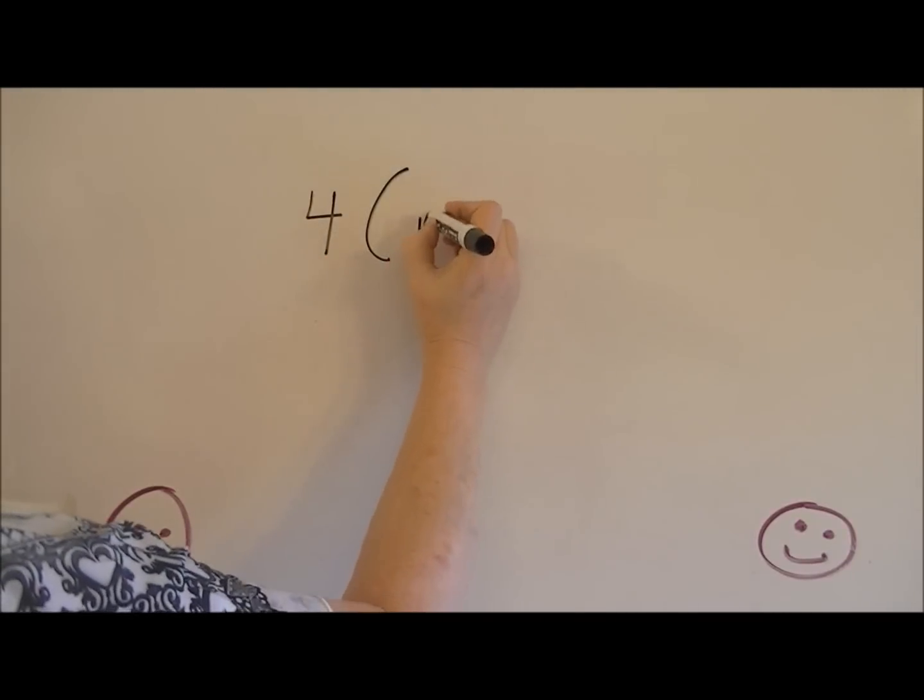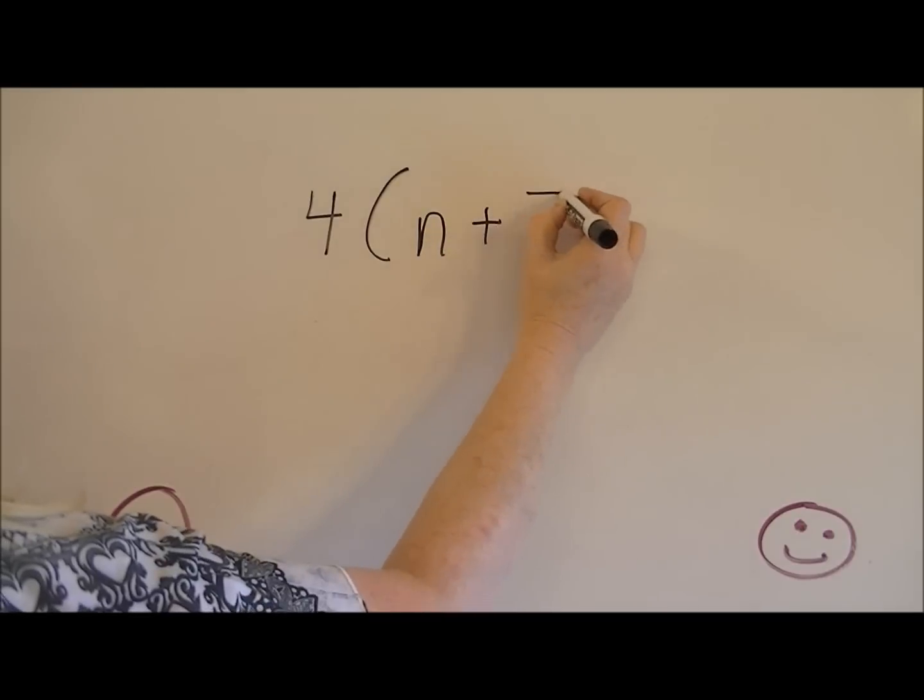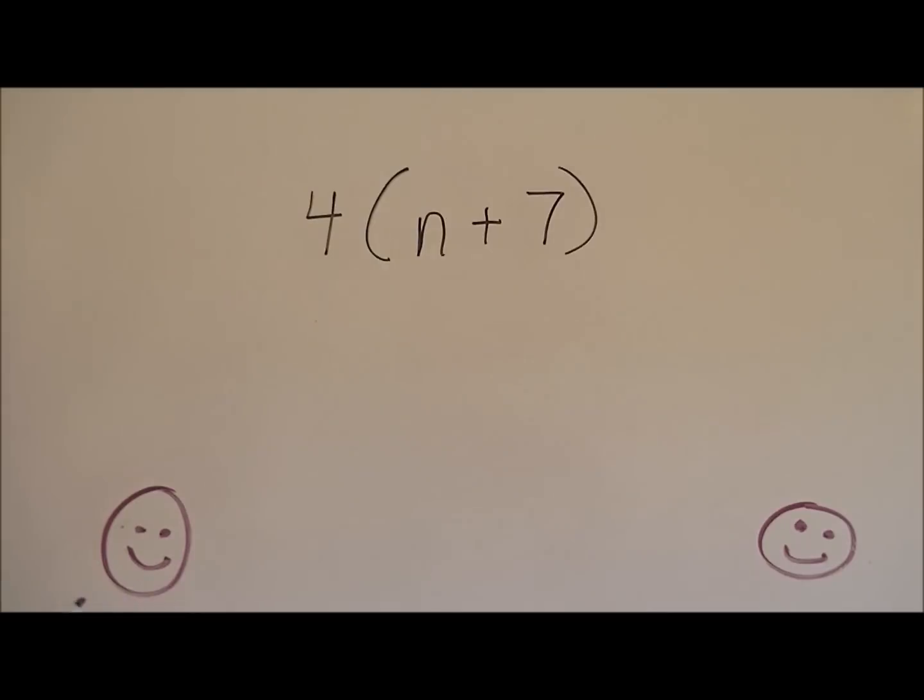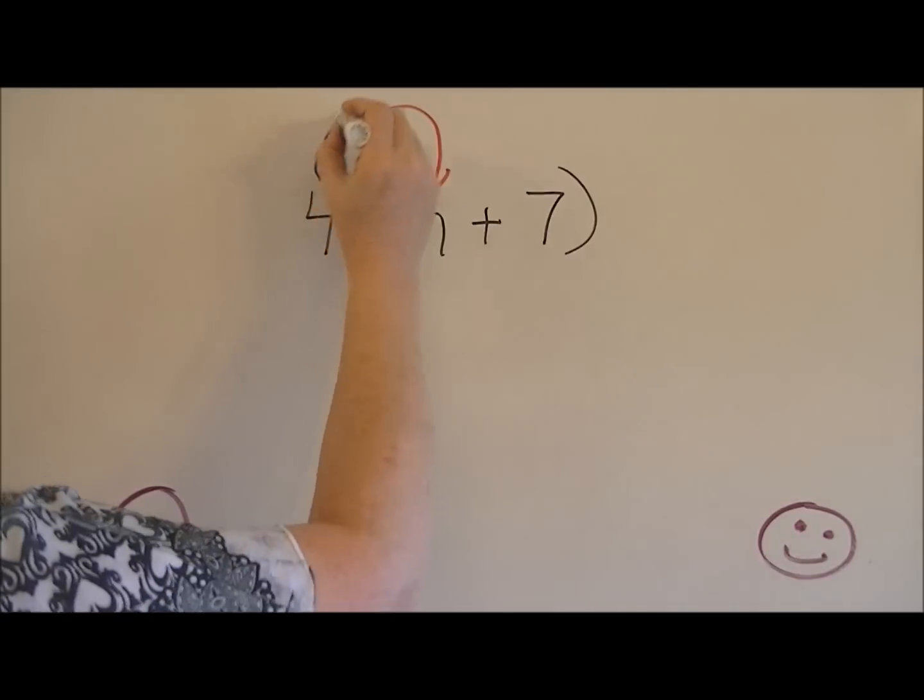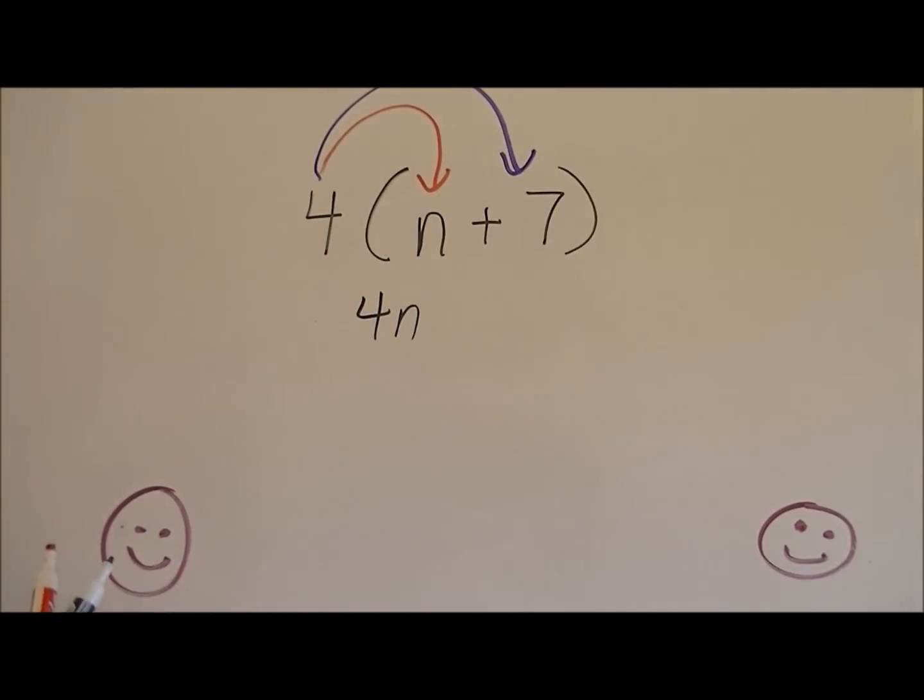Let's say that you have four times n plus seven. Again, you're going to multiply the four times the variable n, and that's going to be 4n. And then you're going to multiply the four times the seven, and that's 28. And we're just going to drop our plus sign down.